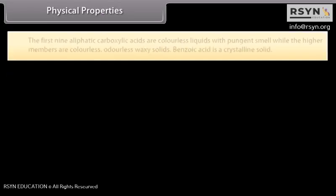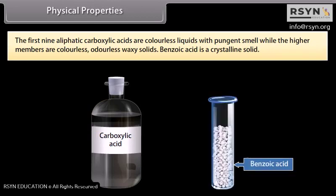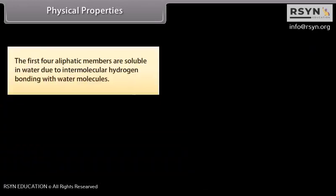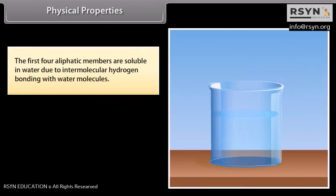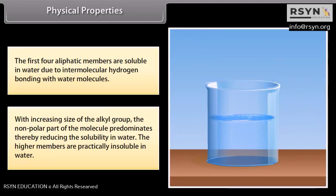Physical properties: the first nine aliphatic carboxylic acids are colorless liquids with pungent smell, while the higher members are colorless, odorless, waxy solids. Benzoic acid is a crystalline solid. Carboxylic acids have quite high boiling points due to intermolecular hydrogen bonding, which results in the formation of dimeric structures. The first four aliphatic members are soluble in water due to intermolecular hydrogen bonding with water molecules. With increasing size of the alkyl group, the nonpolar part predominates, reducing solubility in water, and the higher members are practically insoluble.